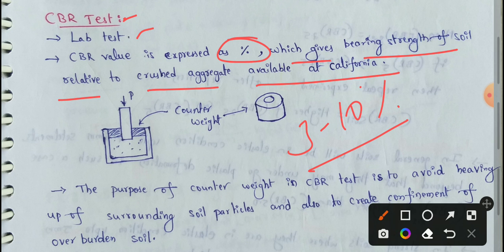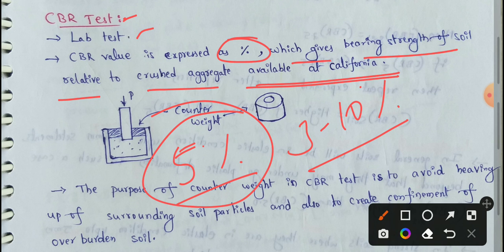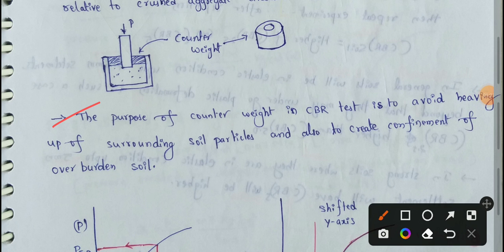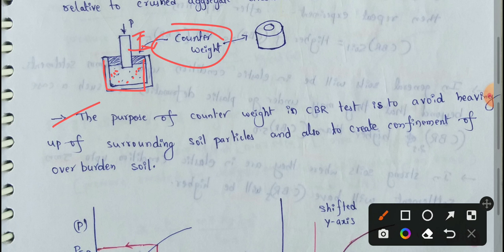The purpose of the CBR test is to compare the CBR value of the test soil to a standard. For example, if the CBR value is 5%, you compare it to the California standard CBR value. The test involves applying weight and counterweight, and some settlement occurs. The soil result is compared to the same standard aggregate value.